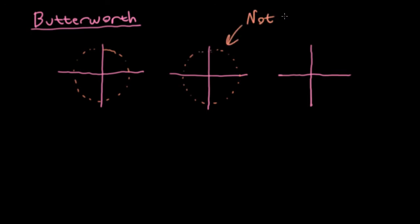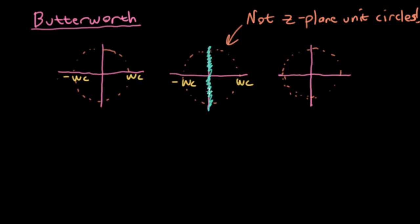Now, for Butterworth filters, I'm going to draw a series of circles, which is incredibly dangerous, because these circles, these are not z-plane unit circles. These are circles that have a radius of omega c, and they're only here because they happen to show up in the derivation of Butterworth filters. Recall that the important thing from the standpoint of frequency response is what is happening relative to poles and zeros near the imaginary axis.